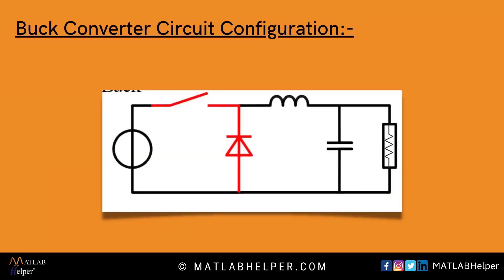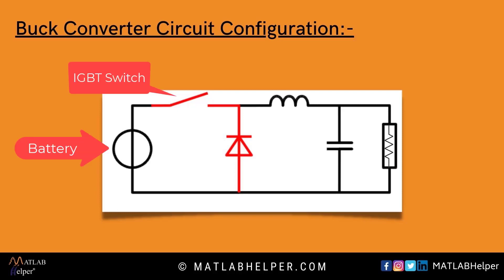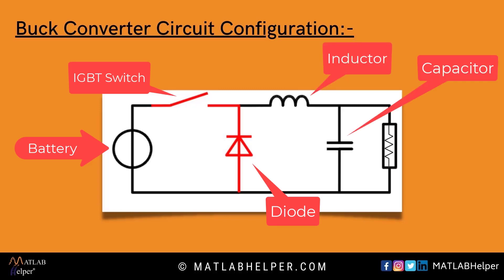This is the buck converter circuit diagram where the input is a battery, then a switch (an IGBT), then a freewheeling diode, followed by an inductor in series, a capacitor in parallel, and a resistor load.